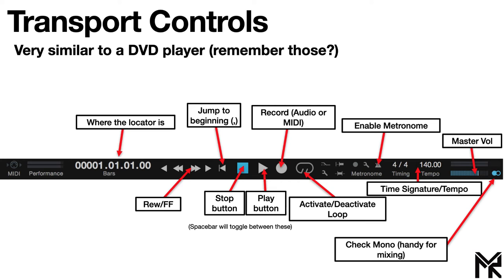Moving over to the left, we have the location indicator which tells you where the locator or playhead is — displayed in bars, beats, and ticks, so you can get really granular about where you are in your track. Then over here you have incoming MIDI information: the left triangle will light up if there's any incoming MIDI from a MIDI keyboard, and the button on the right will light up if there's any outgoing MIDI information from Studio One being sent to an external synthesizer.